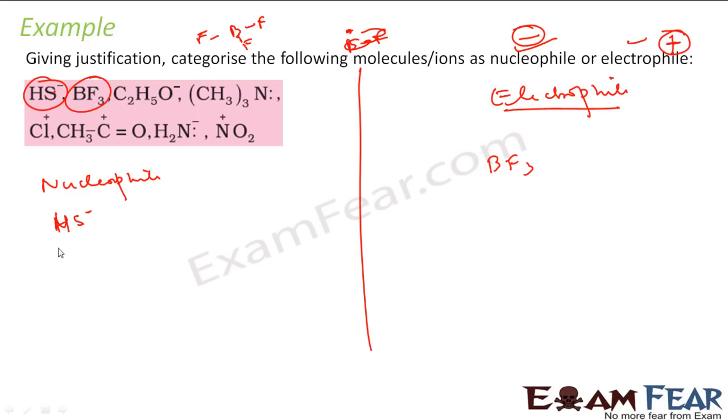C2H5O- negative charge, directly put in nucleophile. Don't think much. (CH3)3N with a lone pair. Since it has a lone pair, that means it has extra electrons. Extra electrons, that means it will love nucleus. So it will be nucleophile.